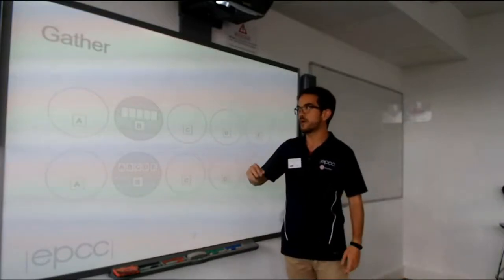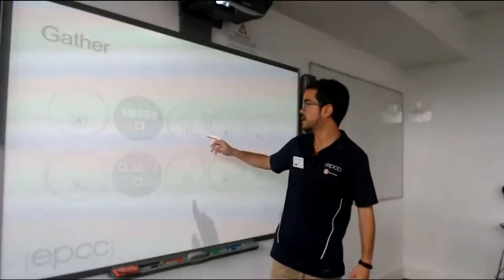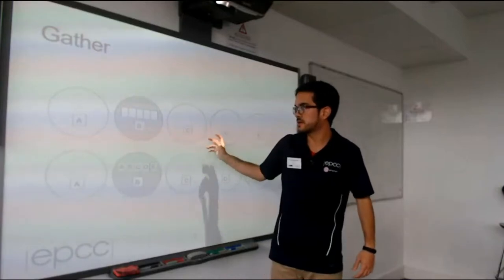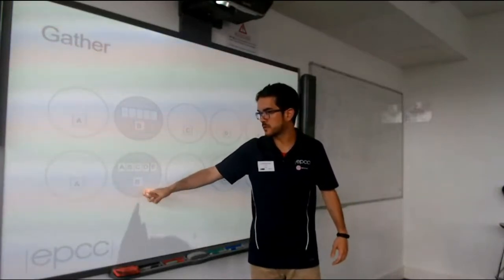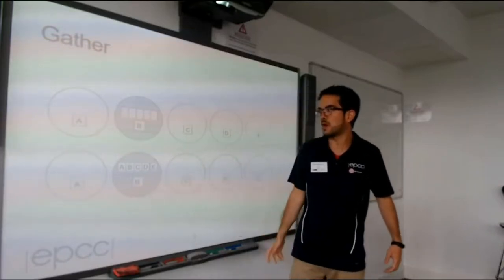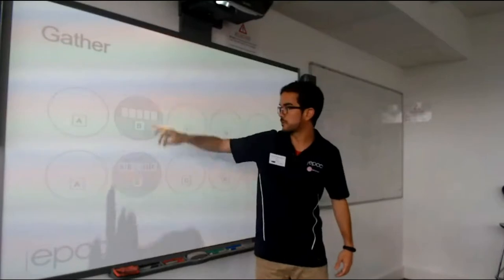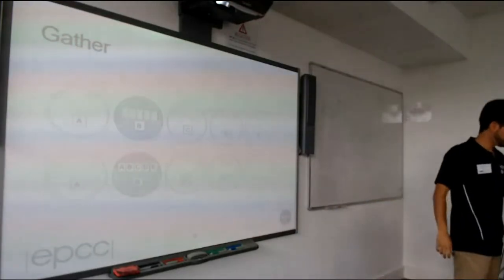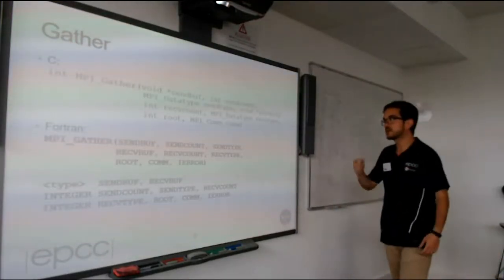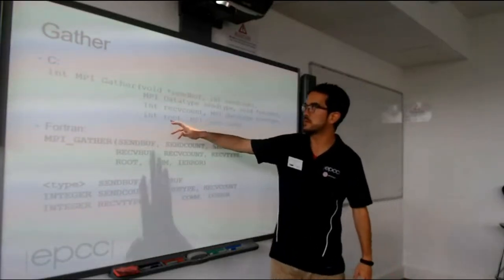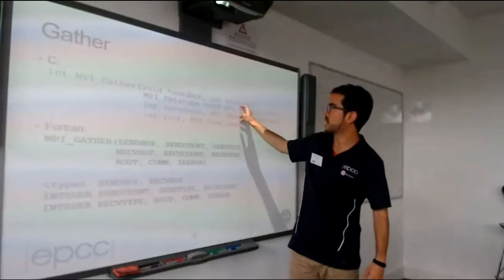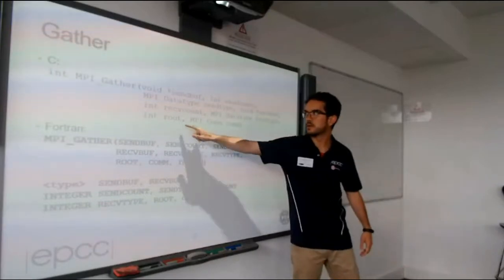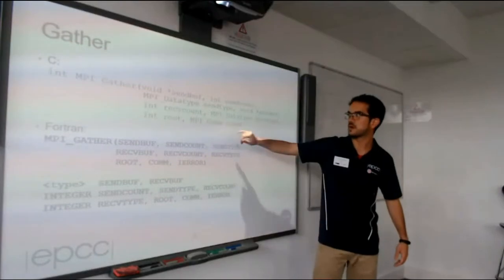For MPI Gather, it is the other way around. We have one element in each process and we want to gather all elements into one process — process one. After the operation, we get a vector of these five values. The syntax is the same as MPI Scatter: the send buffer with count and type, the receive buffer with count and type, the process that gathers all elements, and the communicator.